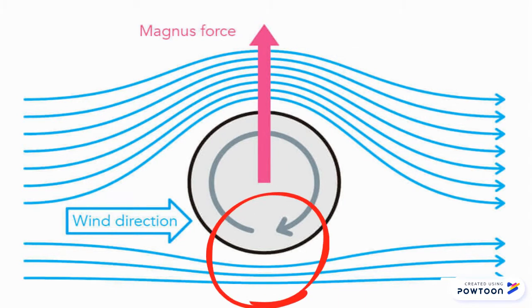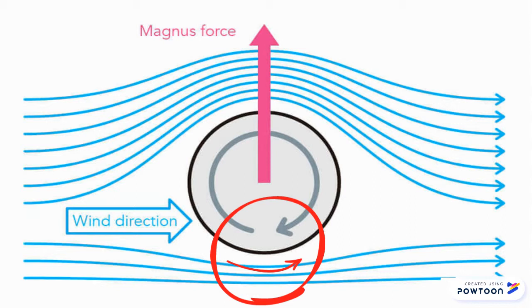But in the lower side, the fluid flow is against the cylinder rotation, which generates a greater drag in this area, thus decreasing the speed and increasing the pressure.